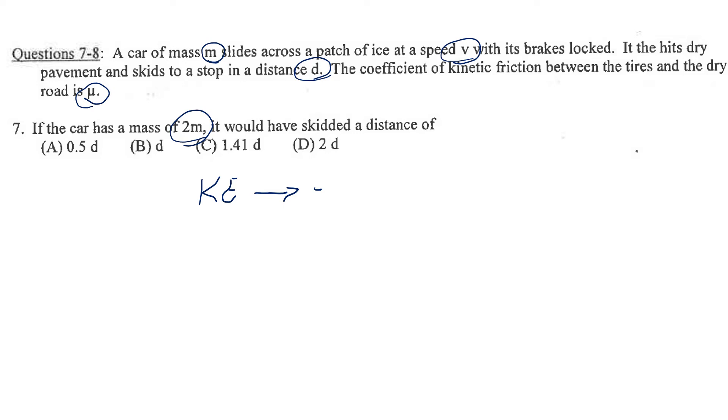So the kinetic energy is 1 half M V squared, right? And then all of that energy is going to be transferred into the work. And work, if you remember, is equal to force times distance. So I'm just going to say the force of friction, right? Because that's the only work, that's the only force that's on it, times distance. Does that make sense?